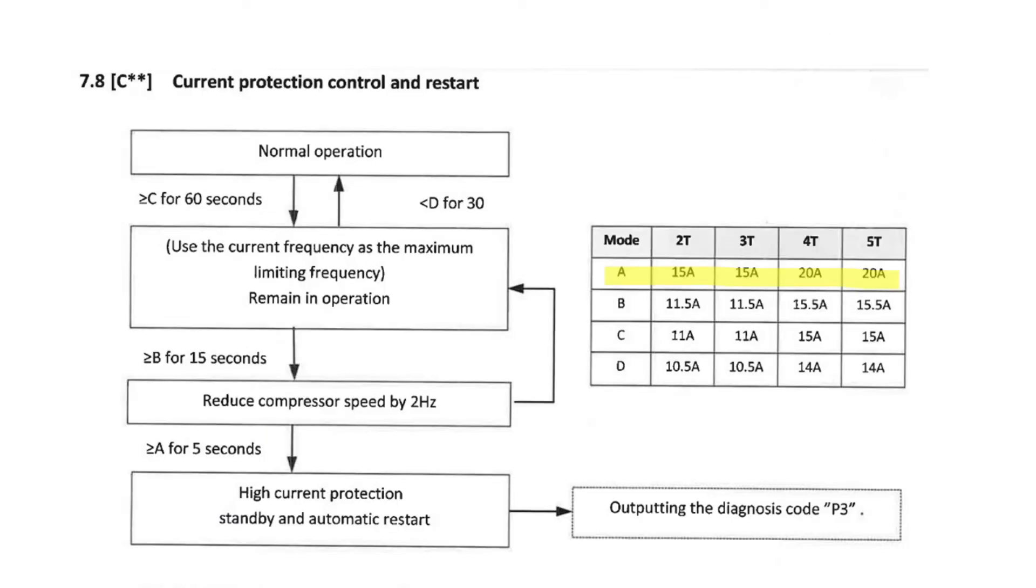The unit will monitor the current. It will turn itself off and restart any time we hit that A mode. And on the smaller version that's 15 amps, on the big version 20. But we'll monitor the operation and it will limit the frequency. So one thing that limits the compressor frequency would be the current draw. Note here, any time it is above the B on the chart, which is 11.5 for the smaller unit, 15.5 for the larger unit, it will decrease the compressor by 2 Hz.